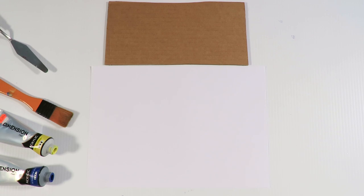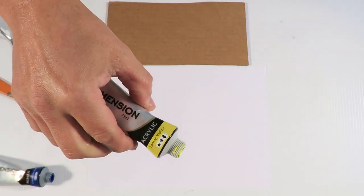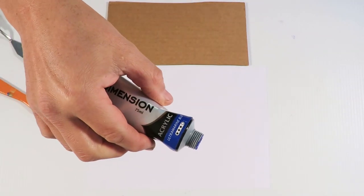G'day everyone. Today we're making some lime green colored paint. We've got some lemon yellow and we've got some ultramarine blue.